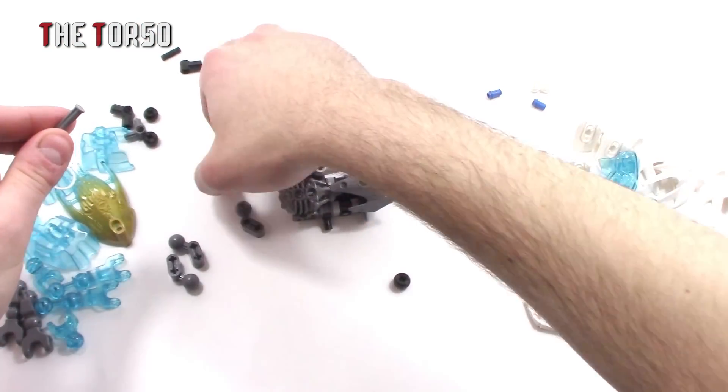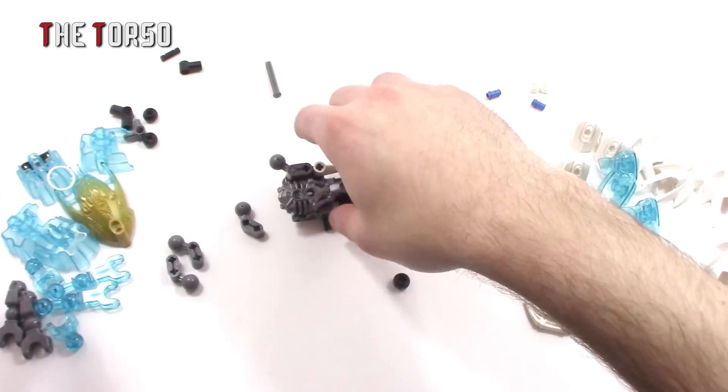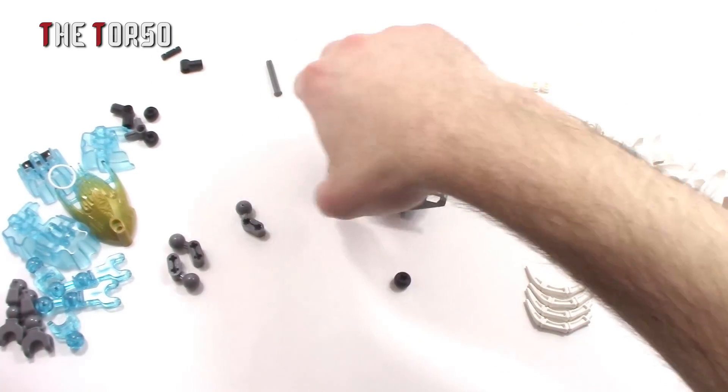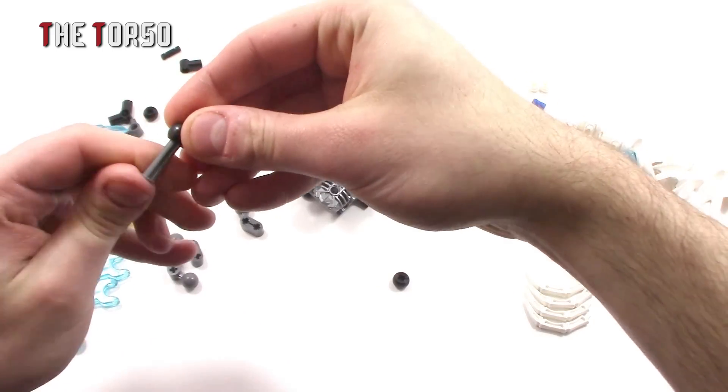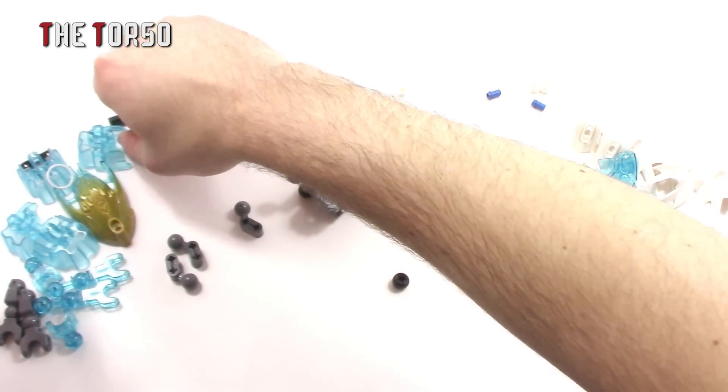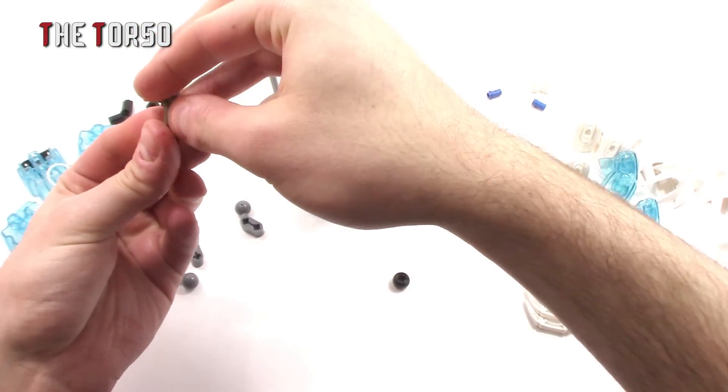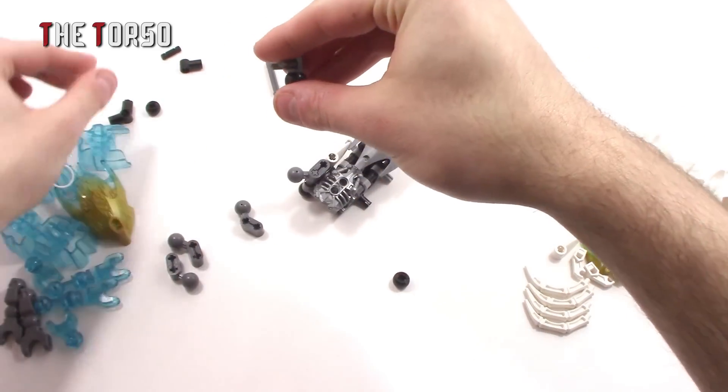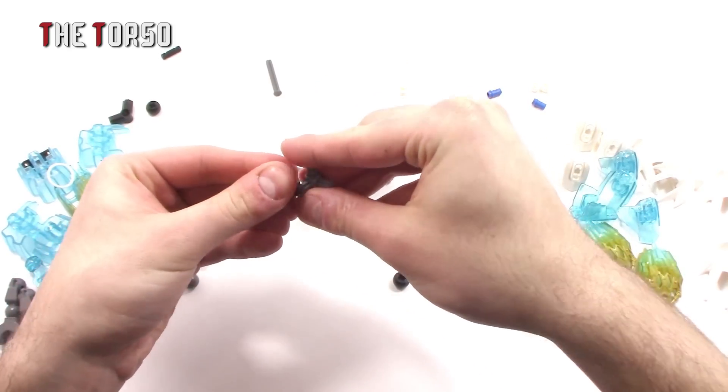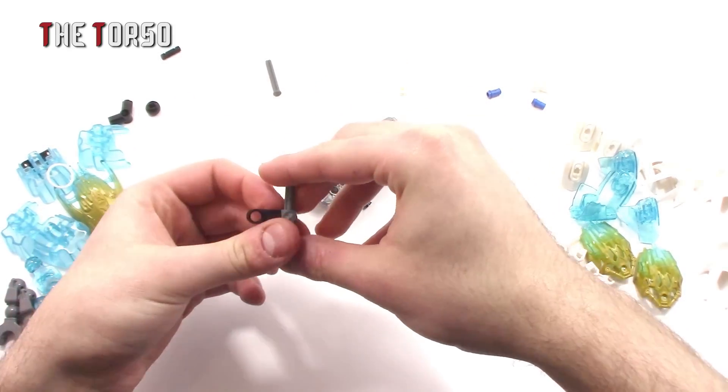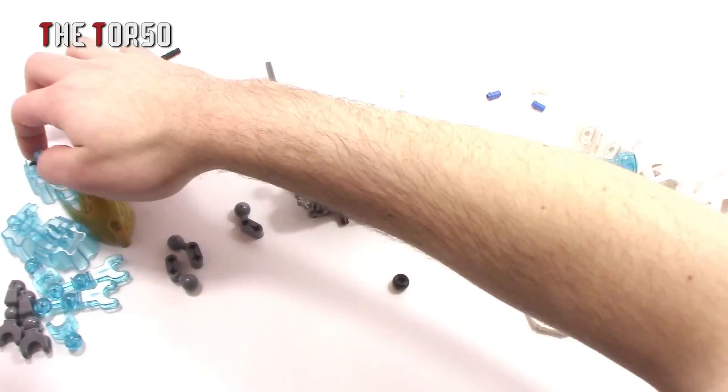So we're going to build another one of these in reverse on that side and that'll complete the actual body. Okay, so we're going to grab another axle here. And again, build that, but in reverse. So we're going to take another ball socket. I've got to build this in reverse, so it's a little confusing, especially when you take blurry photos.